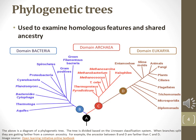This chart depicts the evolutionary relationships of different kingdoms of life. These kingdoms are arranged into three domains of life: bacteria, archaea, and eukaryotes. Homologous features can be traced on the phylogenetic tree because they have the same evolutionary origin.